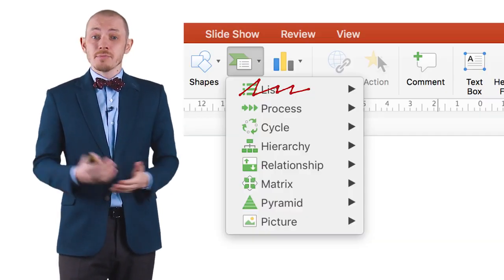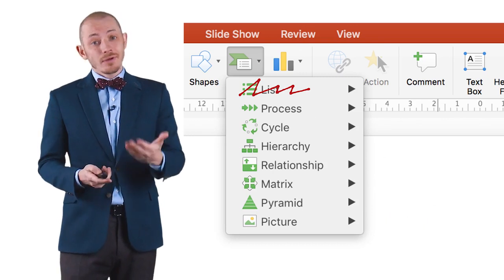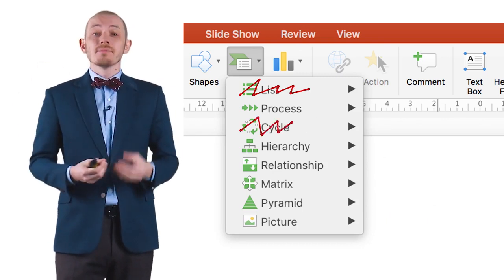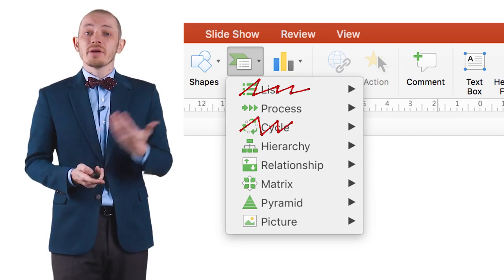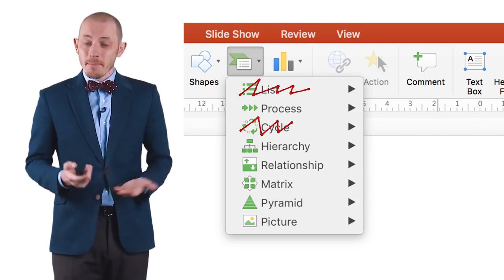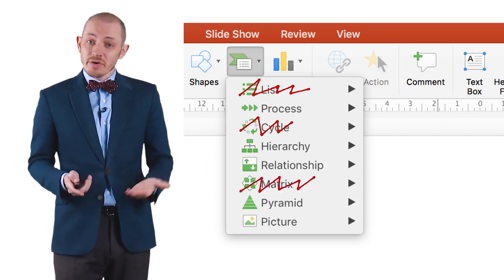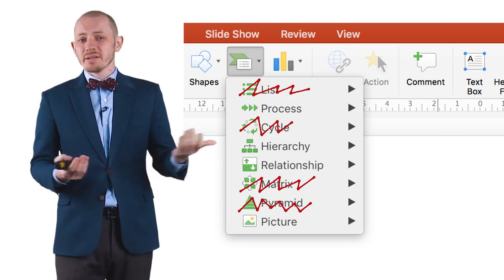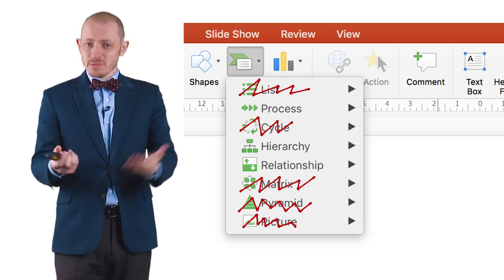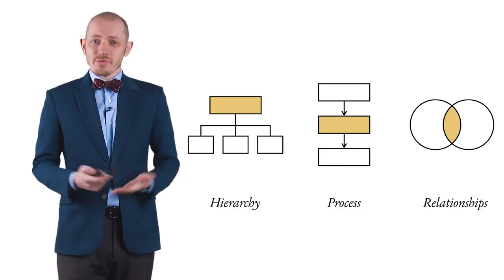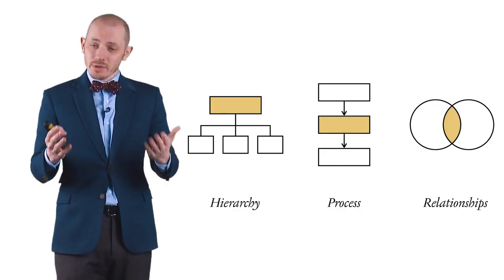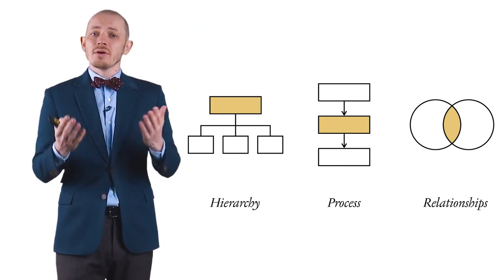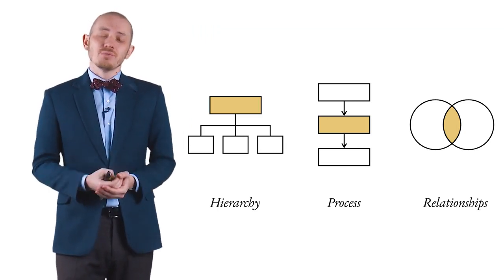Process is a legitimate kind of diagram. Cycle, however, is not, because it's just a cyclical process. Hierarchy is a diagram. Relationship is a diagram. Matrix is a table. Pyramid is another kind of relationship or hierarchical diagram. And picture is also not a diagram — it's a picture. So we're down to three, and in this course we will cover three different kinds of diagrams: hierarchical, process, and relationships.